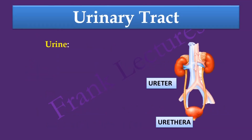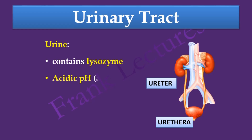In the urinary tract, the urethra is cleaned by the flow of urine. Urine contains lysozyme and has an acidic pH of around 6. These features inhibit microbes and their colonization in the urinary tract.